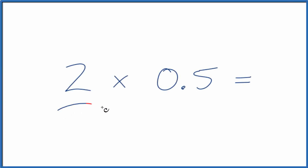You might be asked to multiply 2 times 0.5. So we have a whole number and we have this decimal. And here's a few ways to think about that.